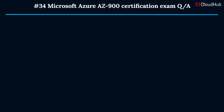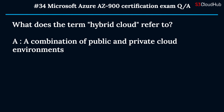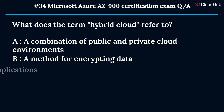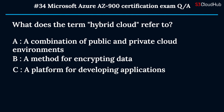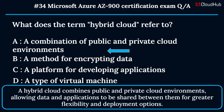The thirty-fourth question: what does the term hybrid cloud refer to? Option A: a combination of public and private cloud environments. Option B: a method for encrypting data. Option C: a platform for developing applications. Option D: a type of virtual machine. The correct answer is option A. A hybrid cloud combines public and private cloud environments, allowing data and applications to be shared between them for greater flexibility and deployment options.